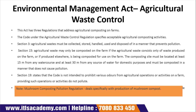Section 5 states that agriculture-based waste may only be composted on a farm if it consists only of waste produced on that farm. If produced somewhere else, it may be composted for use on a farm. The composting site must be located at least 15 meters from any water body and at least 3 meters from any source of water for domestic purposes.